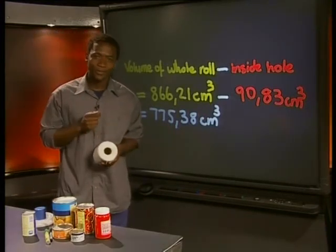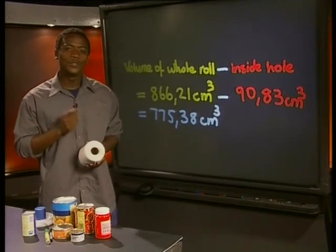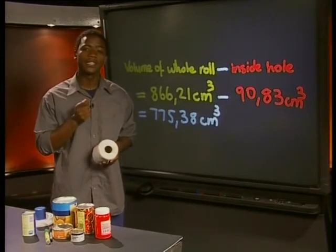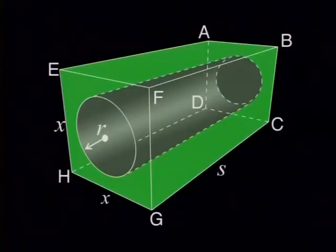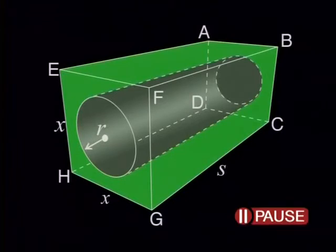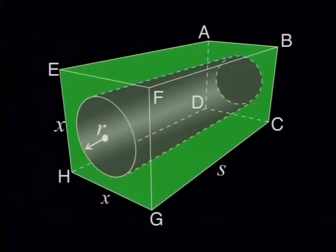Here's one more challenge for you. For this one, you will need to use what you know about the volume of cylinders and the volume of right rectangular prisms together. Here's a right rectangular prism with a cylindrical hole through it. Can you calculate the volume of this prism? In this problem, we're not given actual measurements. The letter symbols x, r, and s represent unknown values on this prism. We will need to use some algebra for this problem.